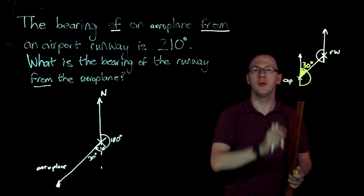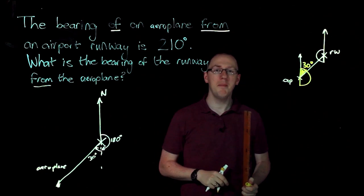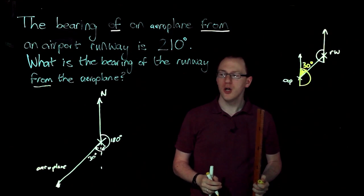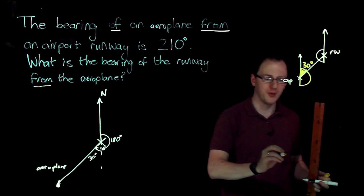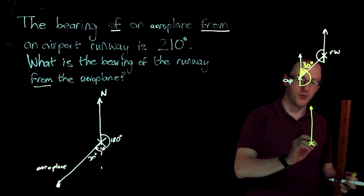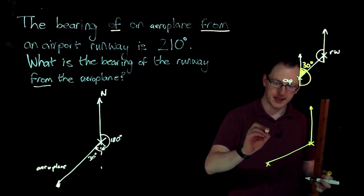So that's how we would do it if we were allowed to draw it. But in some of these questions we're asked to calculate the bearing. We're not allowed to use our protractor. So we need to use a sketch like this one, like the one we already had. I'm going to draw one again. So we've got our airport runway, we have our aeroplane, they're joined, something like that.